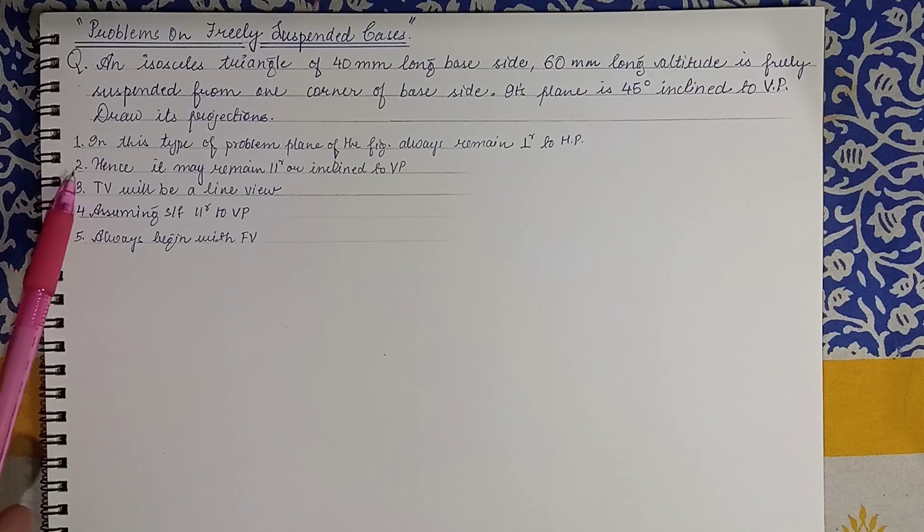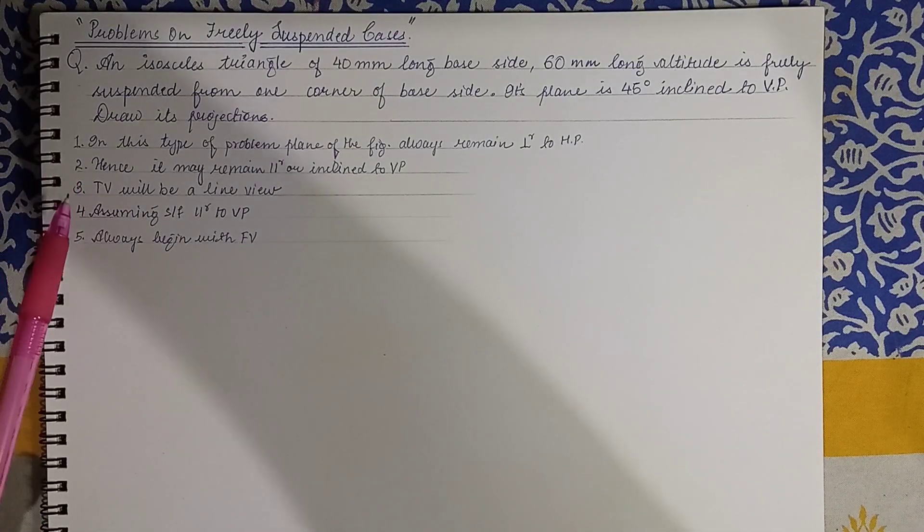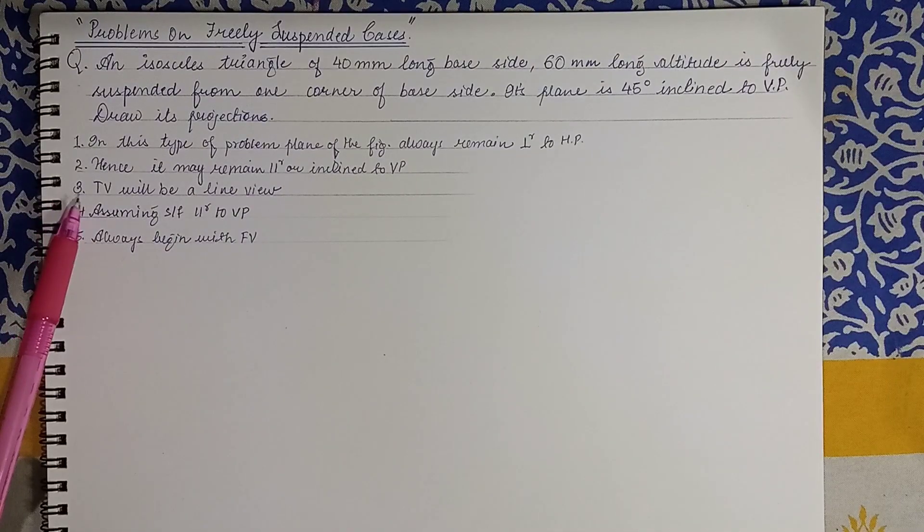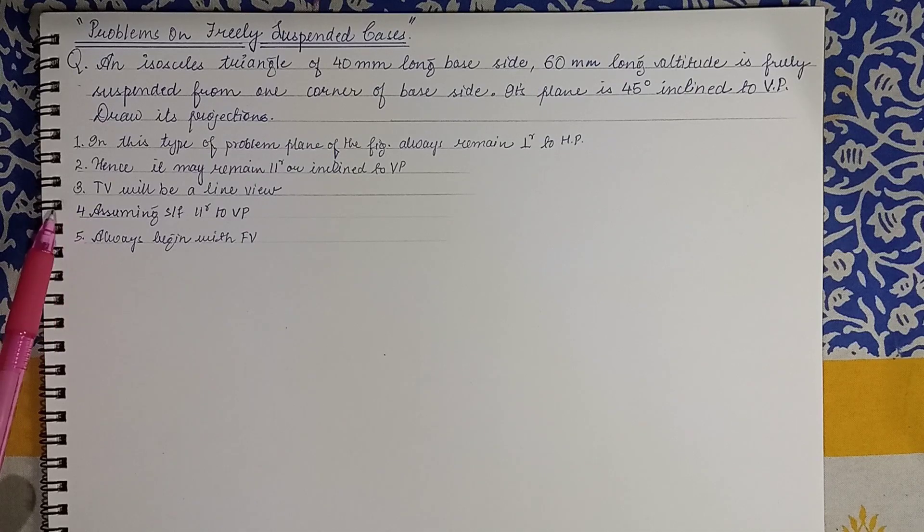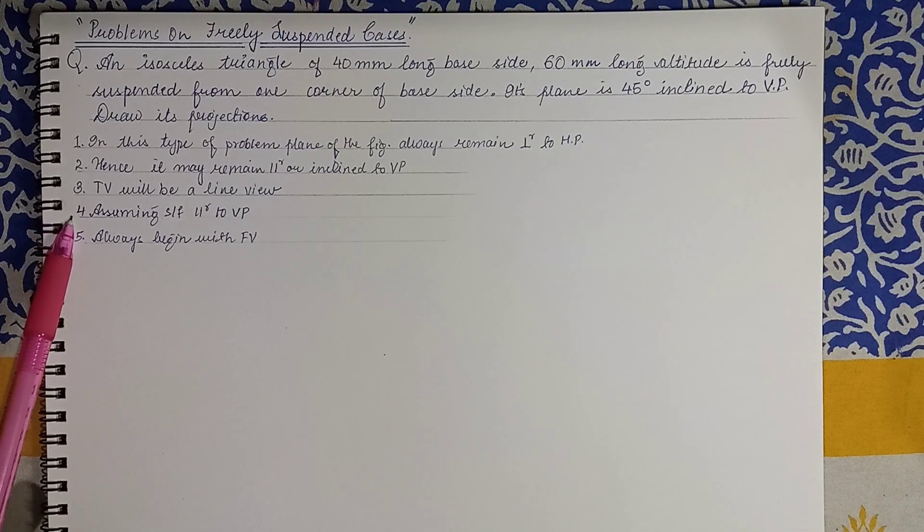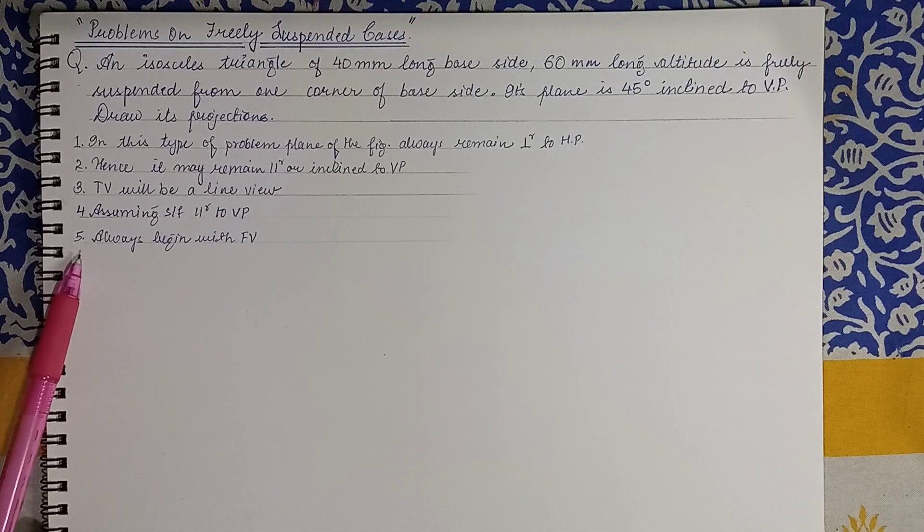In this problem, the plane will always be perpendicular to HP. Hence it will remain parallel or inclined to VP. It will give you a line view in the top view. So let us assume the surface is parallel to VP. This is our initial condition. Therefore when a surface is parallel to VP we will always start with the front view because the front view will give us the true shape. But initially first we will draw the given plane.